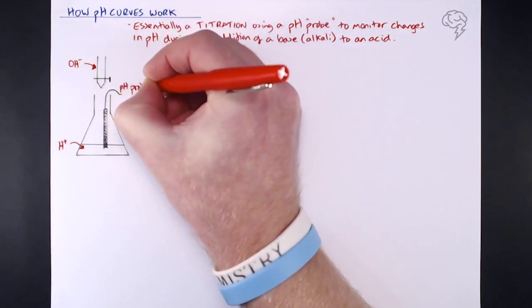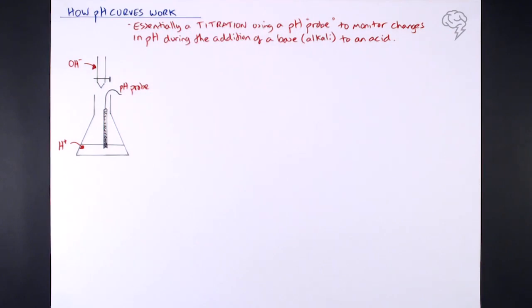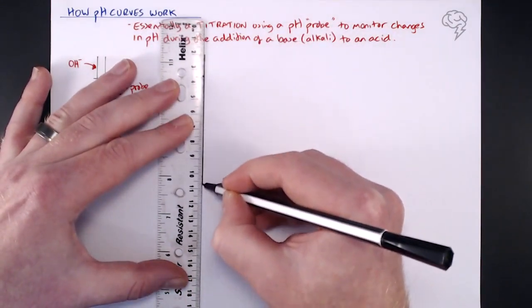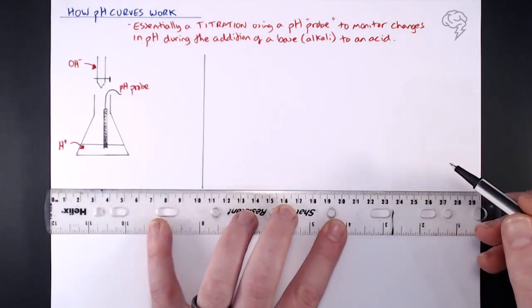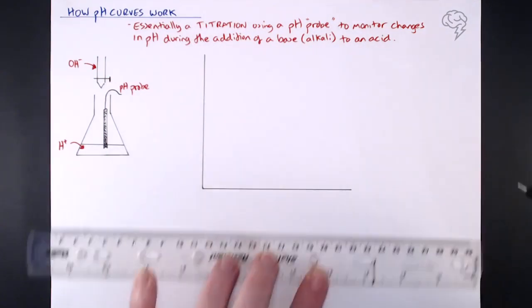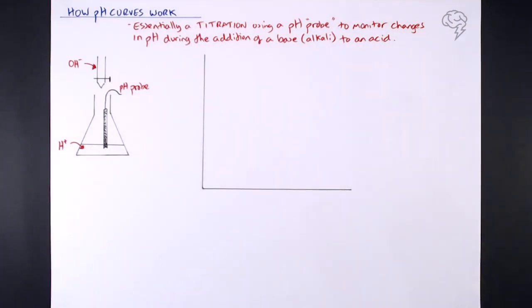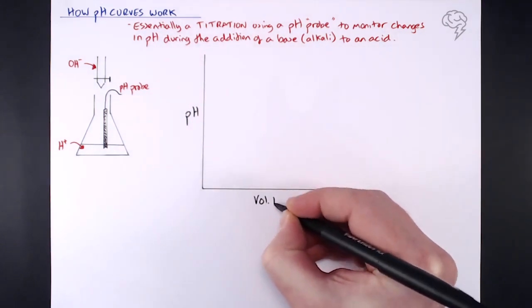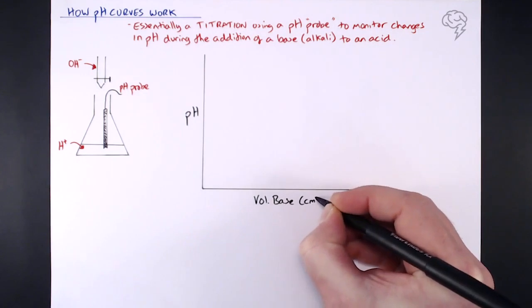What does a pH curve look like? So we're adding some alkali to an acid, and as we're getting our results we're going to see changes in pH. Once we've got all those changes in pH we're going to end up with the curve, the pH curve. And what that appears on are these axes, which are pH on the y-axis, so we're monitoring the changes in pH.